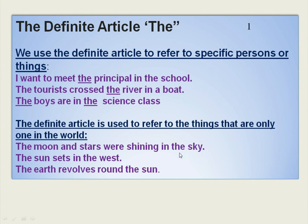'The sun sets in the west.' There is only one sun in the solar system, so we use the definite article 'THE' before 'sun'. Similarly, 'The earth revolves around the sun.' Earth is the name of the planet we live on — it is a unique thing. So we use the definite article 'THE'.